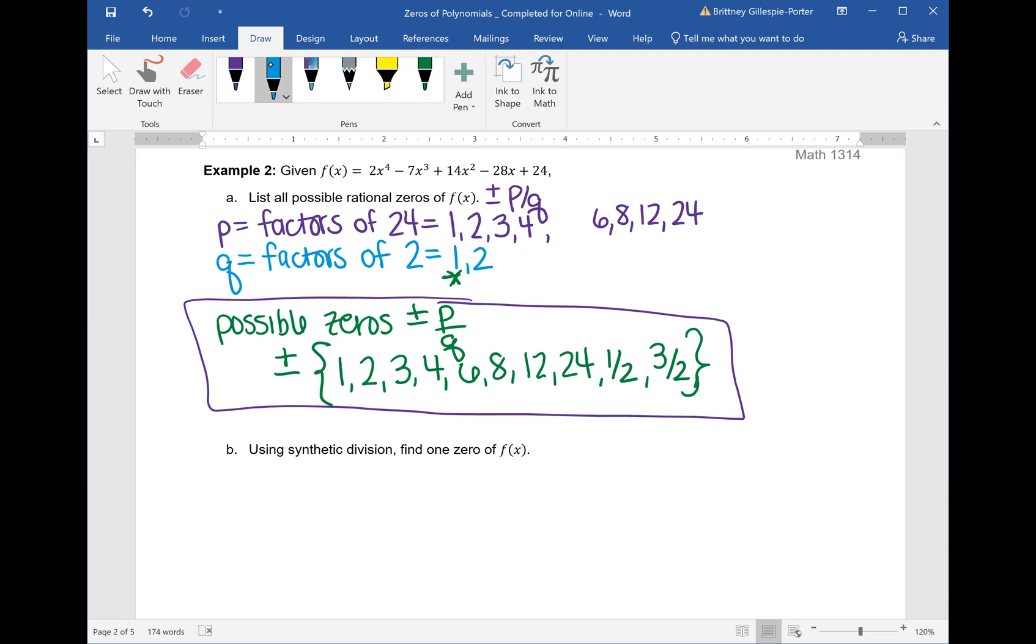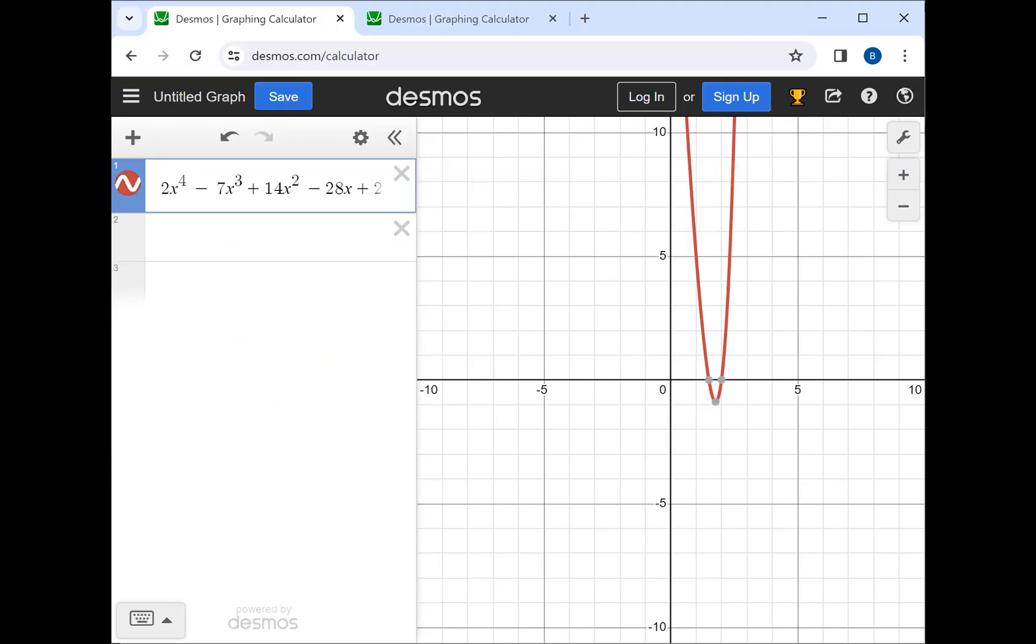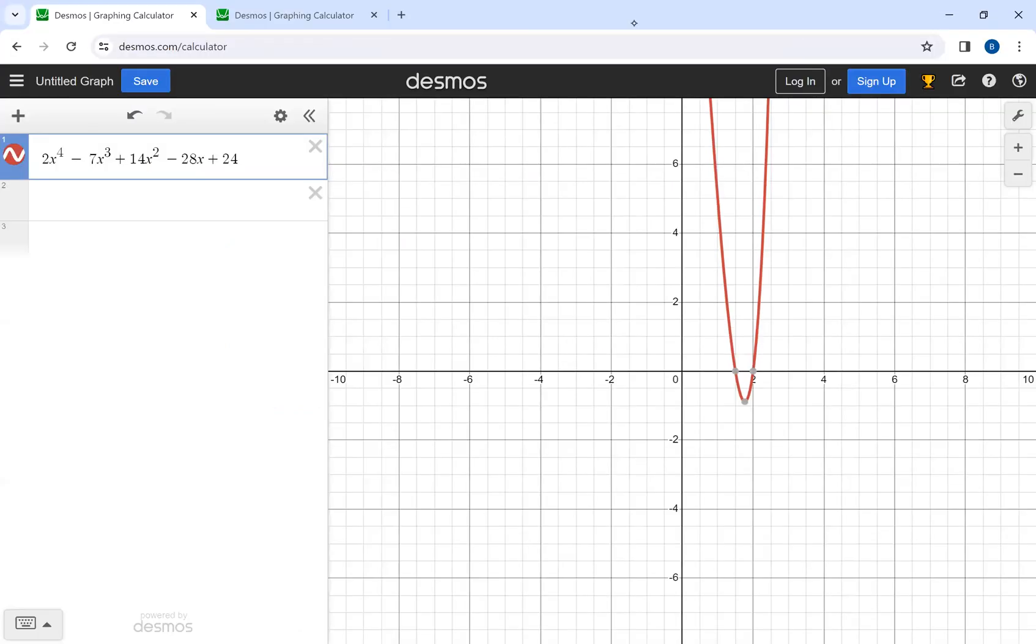Part B says using synthetic division, we need to find one zero of f(x). A bunch of the videos are going to show you that you need to randomly choose one of these numbers out of our p over q, our possible rational zeros, and do the synthetic division to try to find a zero. I don't want you to do that. Instead, what you're going to do, you're going to go to a graphing website.